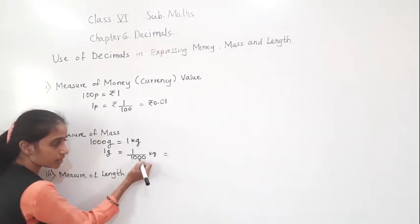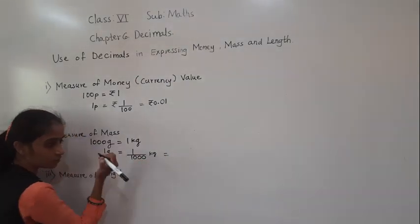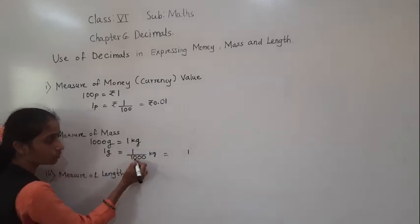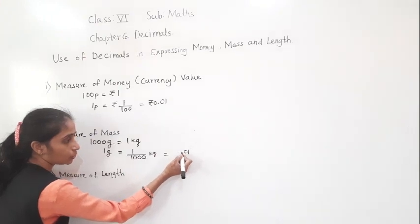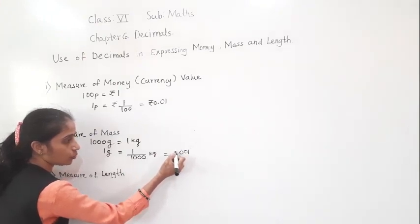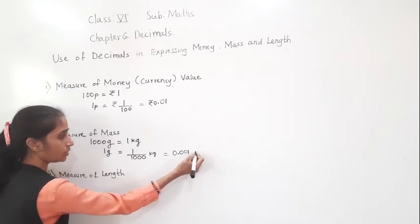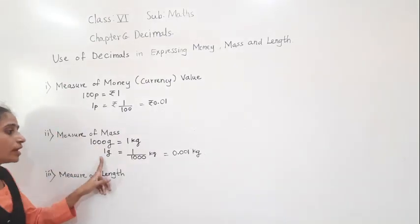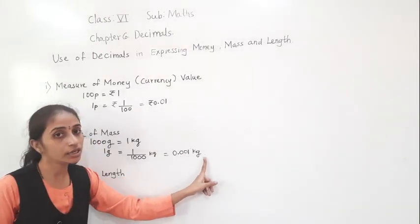How many zeros are in 1000? Three. So before 3 digits we shift the decimal point. Here we have 1, so we place zeros: 1, 2, 3 — shift decimal point before 3 digits. So what we get is 0.001 kg. Therefore 1 gram is equal to 0.001 kg.